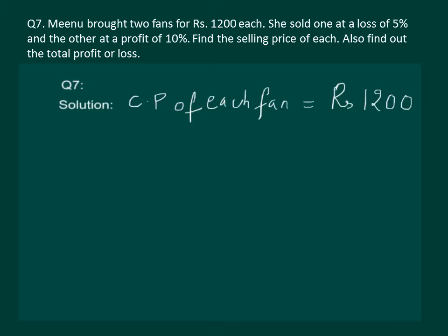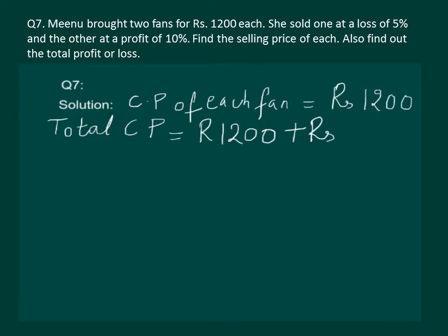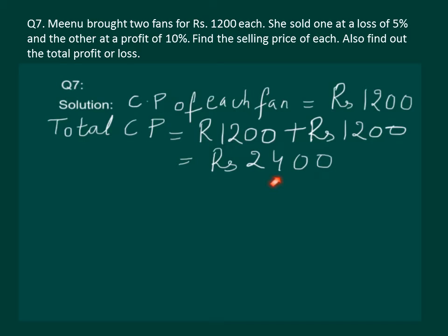The total cost price of two fans would be rupees 1200 plus rupees 1200, which equals rupees 2400. Note that this figure is very important — it will be used at the end to compare with the total sale price to determine whether Minoo made a profit or a loss.